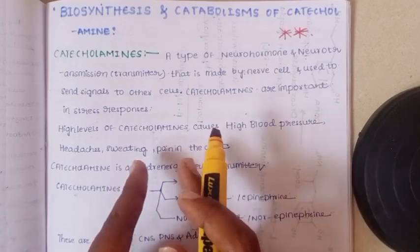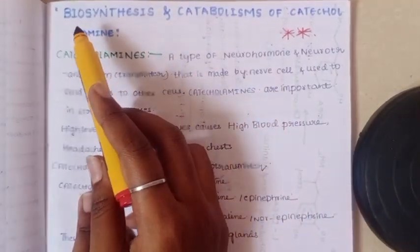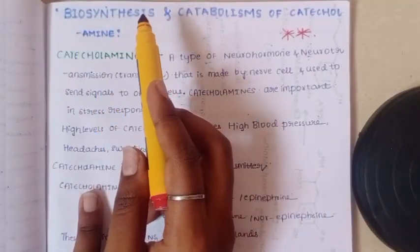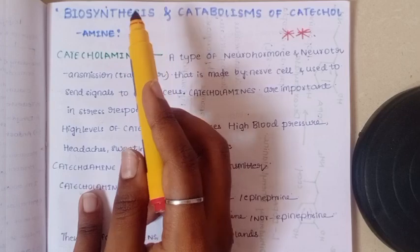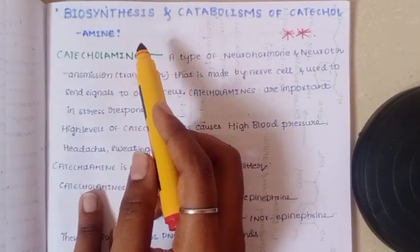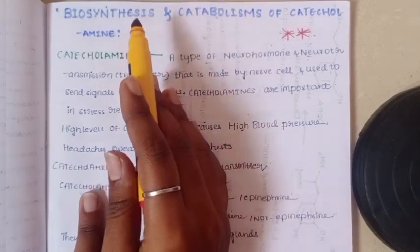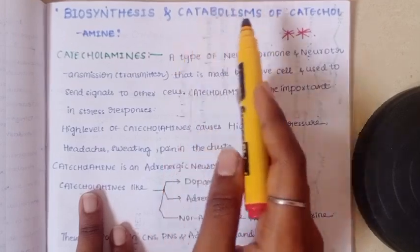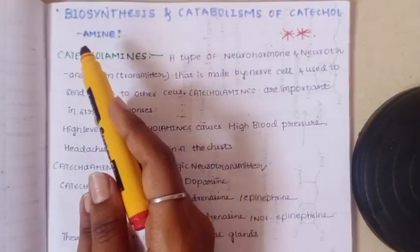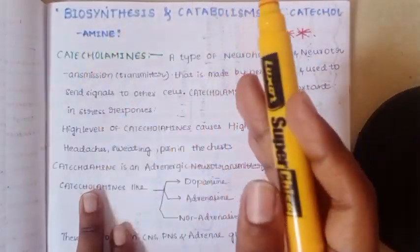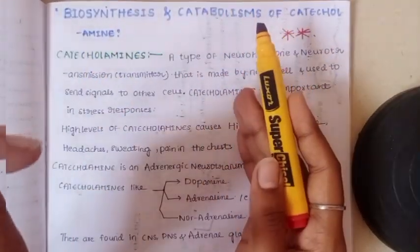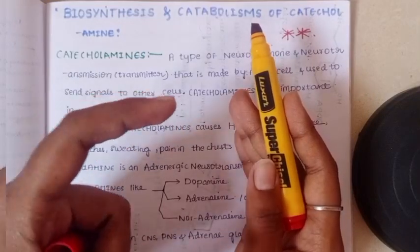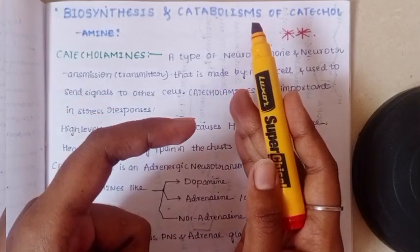Here is biosynthesis. 'Bio' means life, and 'synthesis' means to produce. So our body produces the catecholamines — that is biosynthesis. The next topic is catabolism, which is the breakdown. If our body has produced something, it will also be degraded.